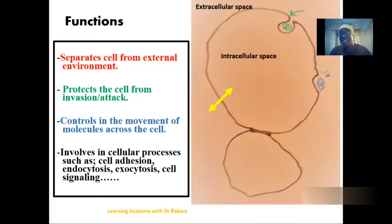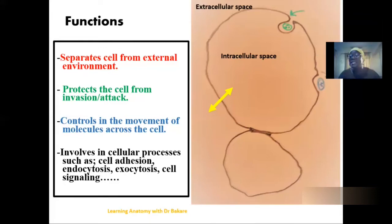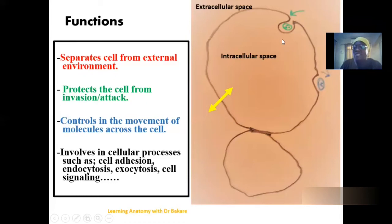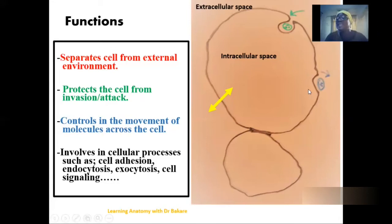Cell membranes are also involved in the process of endocytosis, which is a process the cell undergoes to take in substances into the cytoplasm. This is shown where a molecule in the extracellular compartment is taken into the intracellular compartment. The cell membrane is also responsible for exocytosis, where structures are taken out of the intracellular compartment, as well as cell signaling and other cellular processes.